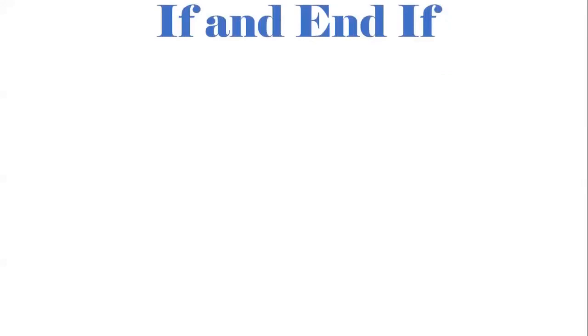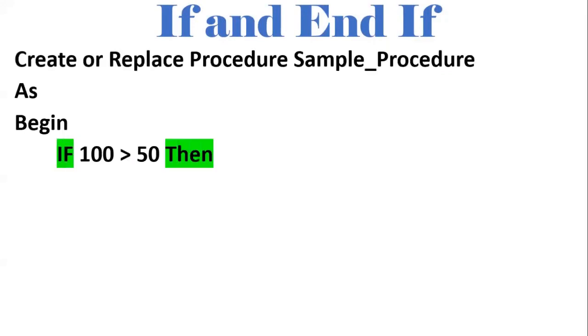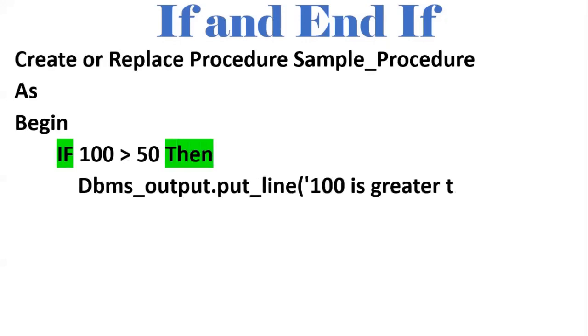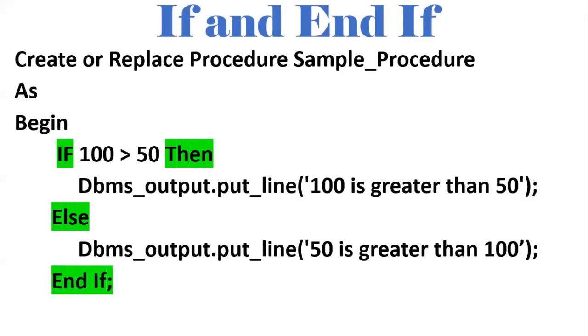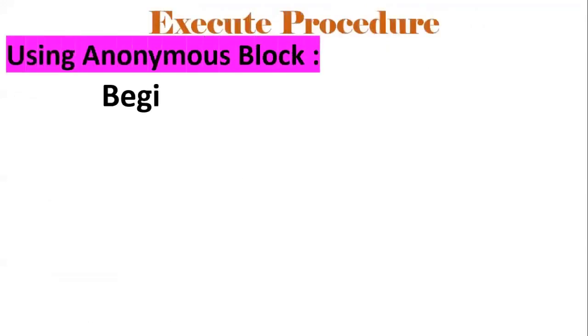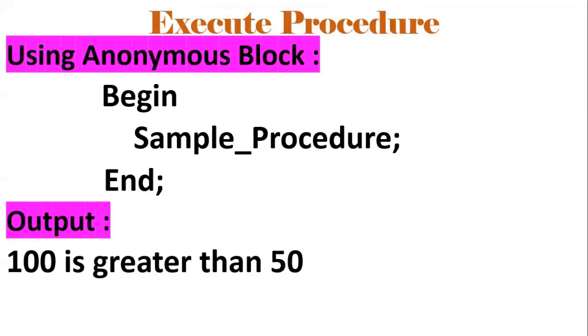Next one is IF and END IF — this is the conditional statement. To do any conditional check, we will make use of IF and END IF. For example, if 100 is greater than 50, then we print '100 is greater than 50', else '50 is greater than 100'. We know that 100 is greater than 50, so the output would be '100 is greater than 50'. If you want to execute this procedure, we make use of an anonymous block.